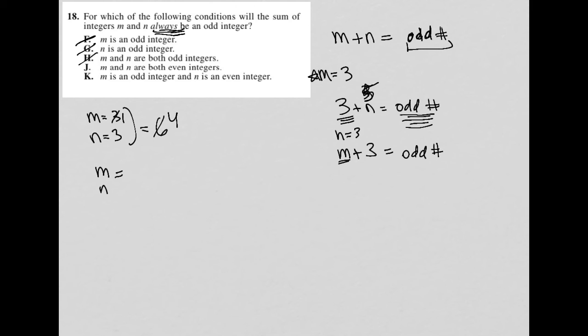Well, let's check that out. So if m is 2, what if n was also 2? Well, that would be 4. So there's an example of it not working. If m were 2 and n were 4, well, that would be 6. So that's another example of that not giving us an odd integer.